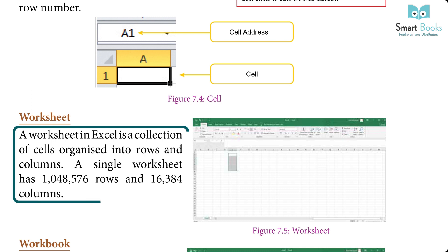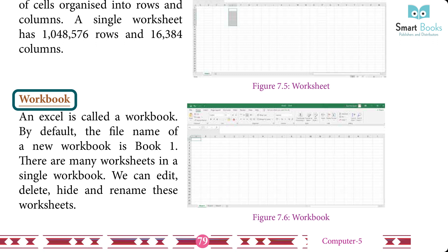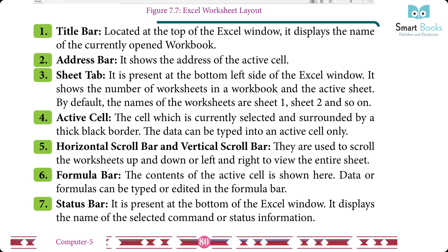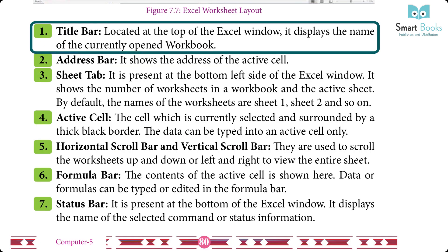Worksheet: A worksheet in MS Excel is a collection of cells organized into rows and columns. A single worksheet has 1,048,576 rows and 16,384 columns. Workbook: An Excel file is called a workbook. By default, the file name of a new workbook is Book1. There can be many worksheets in a single workbook, and we can add, delete, hide, and rename these worksheets.